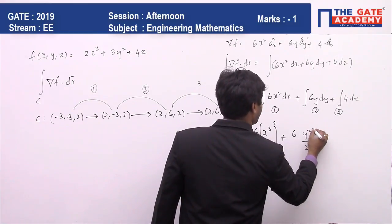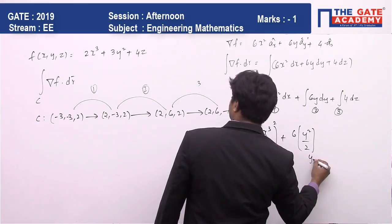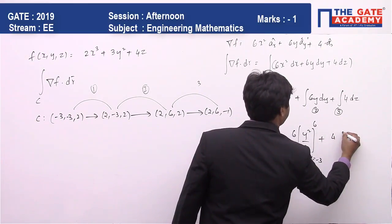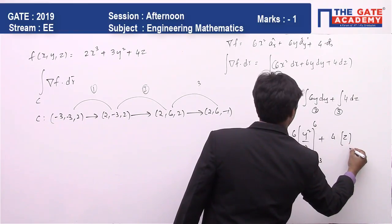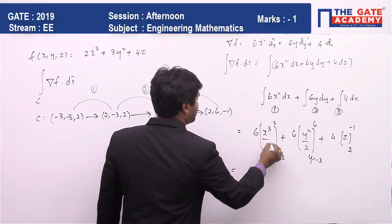6y gives y²/2 by 3, where the value of y is changing from -3 to 6. And in the third path, 4z where z is changing from 2 to -1.